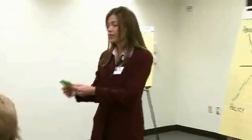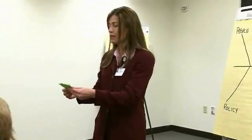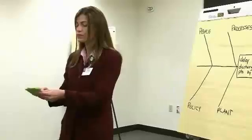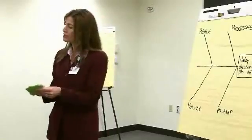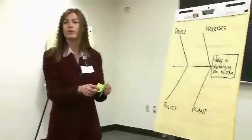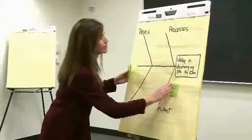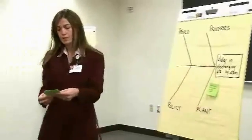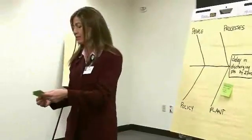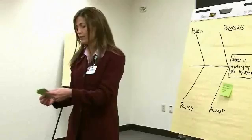Our first one reads: skilled nursing facility unable to accept patient. That's an external environment issue. Under what heading would we place this? I think that would go under plant or environment. The next one says: family changes mind about discharge placement — rehab versus nursing home. That goes under people.